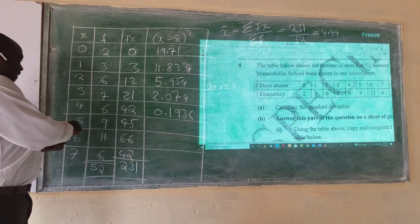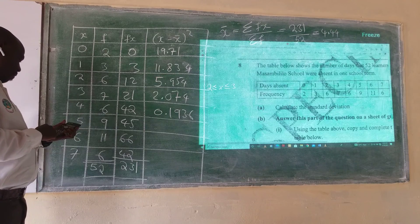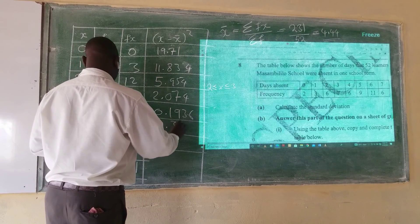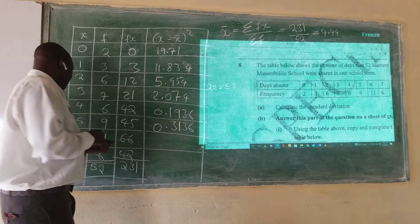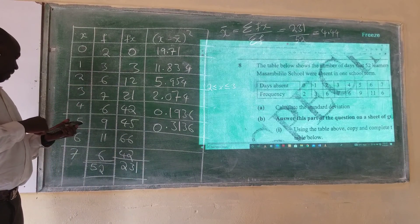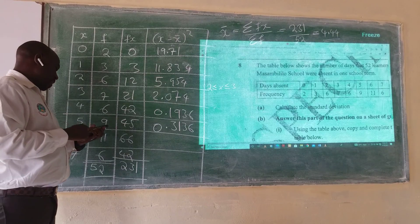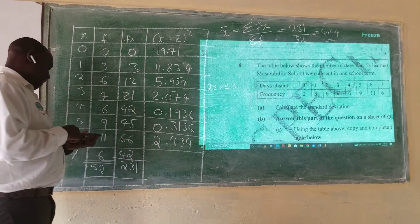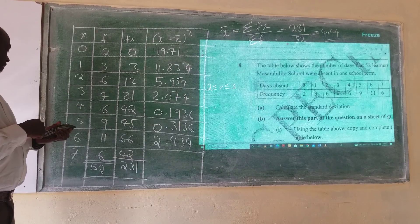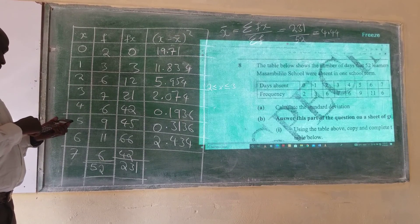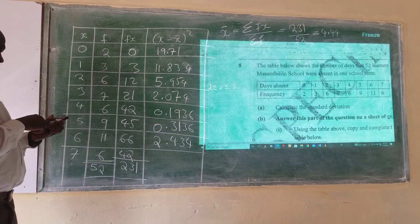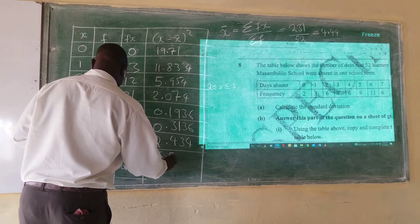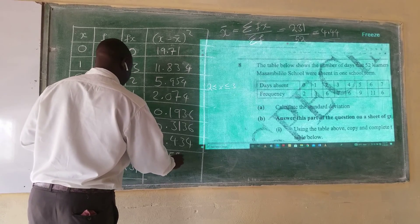Continuing with the remaining rows: (5 − 4.44)² = 0.3136; (6 − 4.44)² = 2.434; and (7 − 4.44)² = 6.5536.